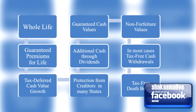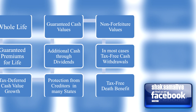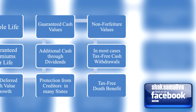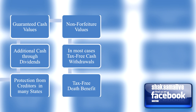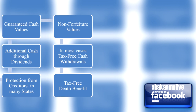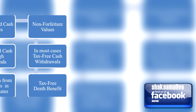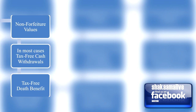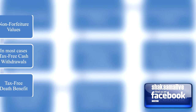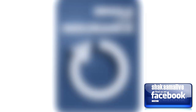to their heirs. Whole life, variable life, and universal life are all types of cash value life insurance. Cash value insurance is also known as permanent life insurance because it provides coverage for the policyholder's entire life.